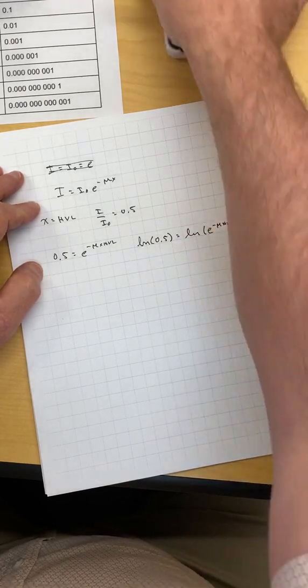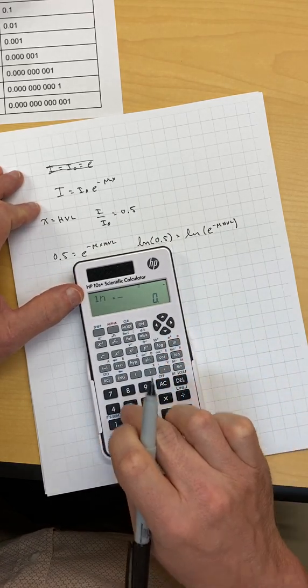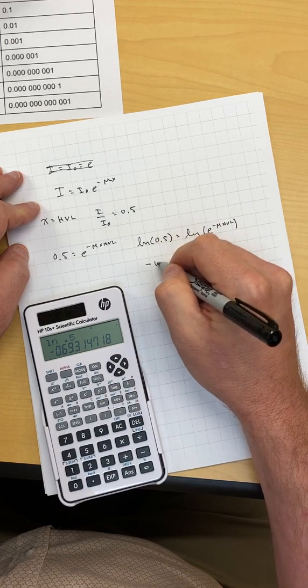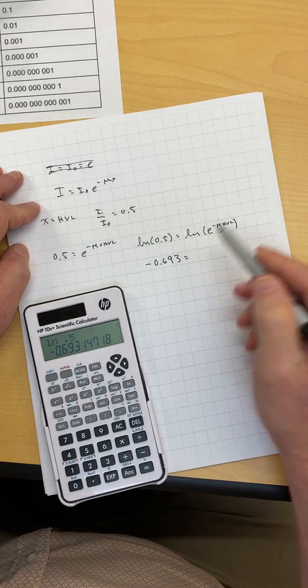Natural log of 0.5, we can calculate that out really quickly. Here's the natural log button. Natural log of 0.5 equals minus 0.693.